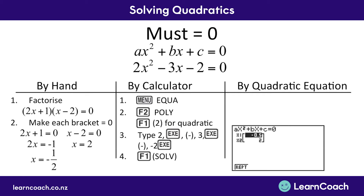Most of you will use this calculator method because it's the easiest one to do. However, we can also use the quadratic equation method, and this is useful because you will need it if you're planning to get excellence. If you're only planning to get achieved or a merit, just focus on the calculator method. But if you are looking to get excellence, please focus on the quadratic equation because that is what will allow you to get excellence level answers.